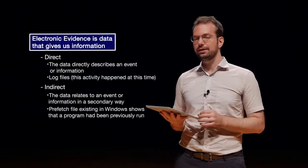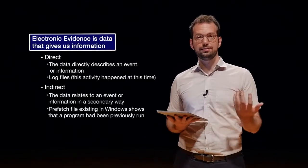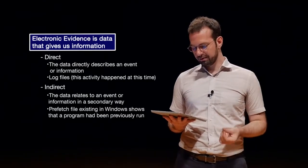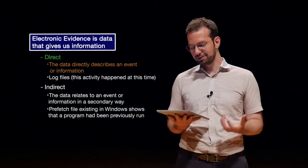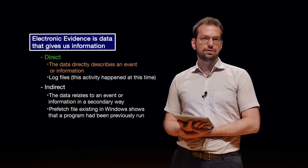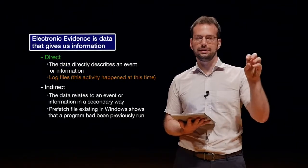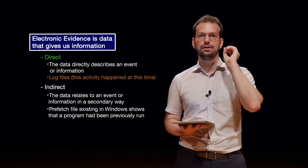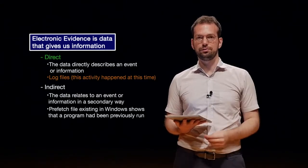Electronic evidence is data that gives us some type of information related to what we're investigating. We can have either direct information, where the data directly describes the event or information. For example, it could be something like log files — we can go through a log file and see exactly what happened and when it happened. So it's giving us direct information: this user logged into the computer at this time. That's directly observable information.